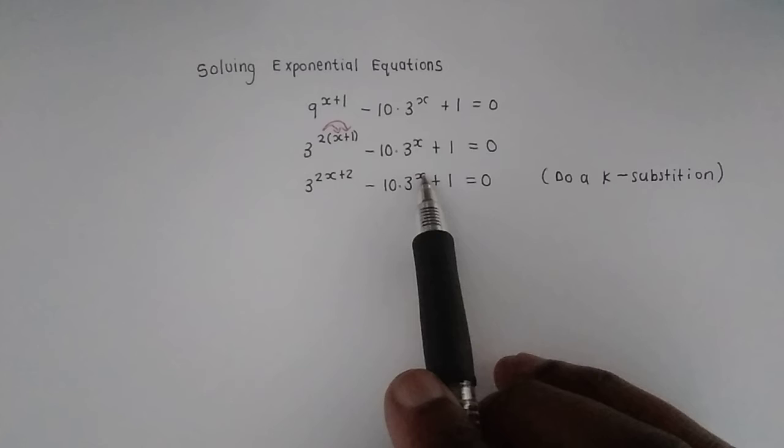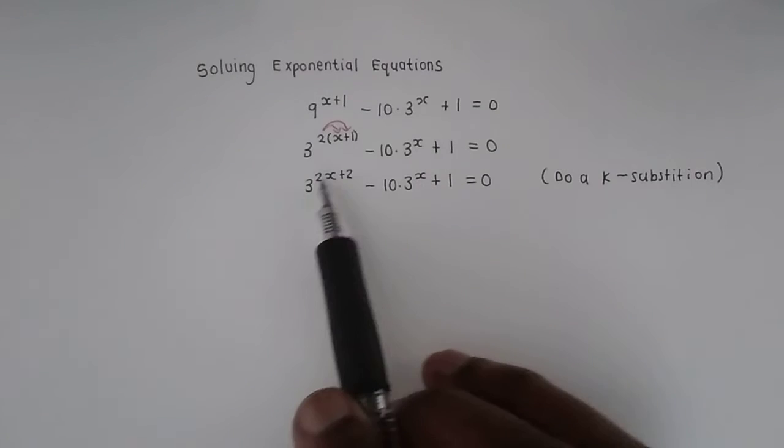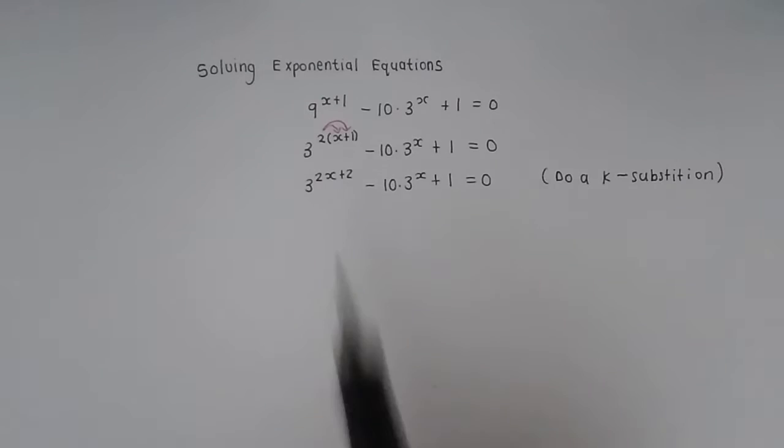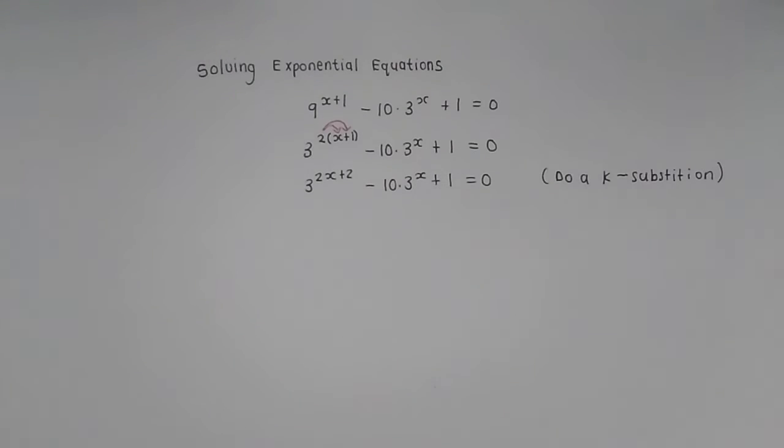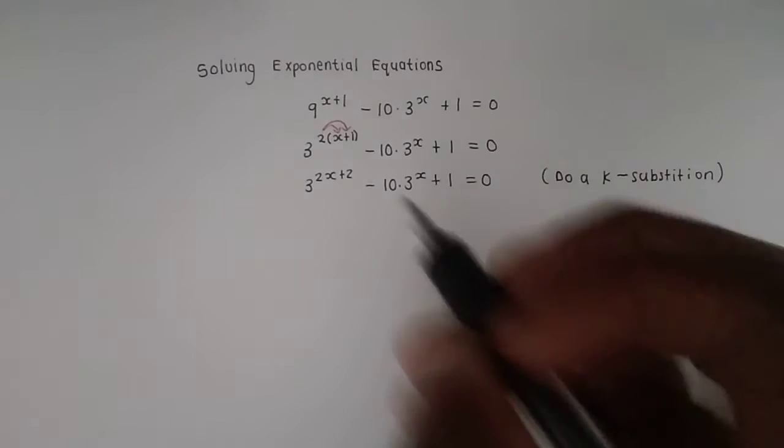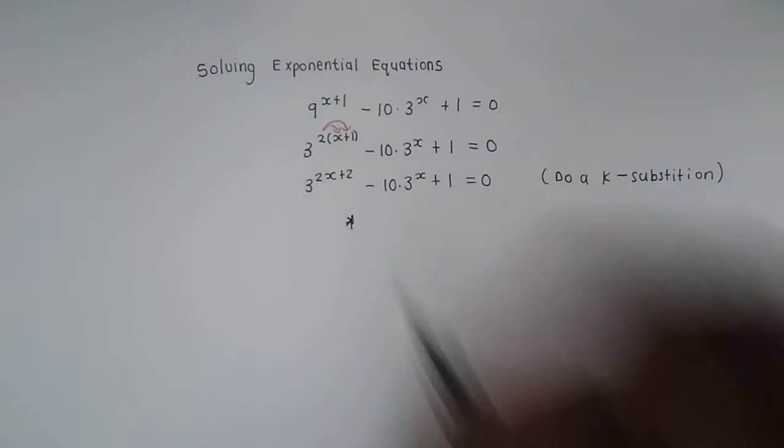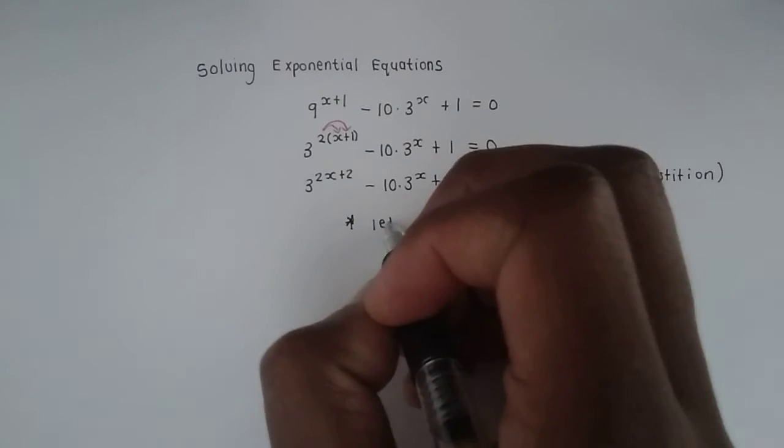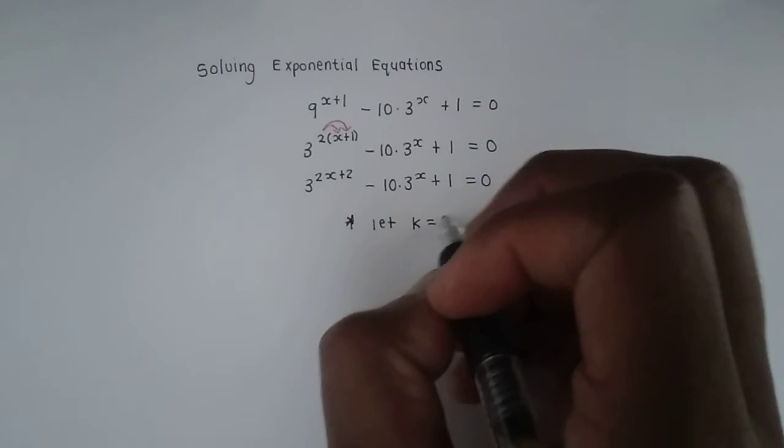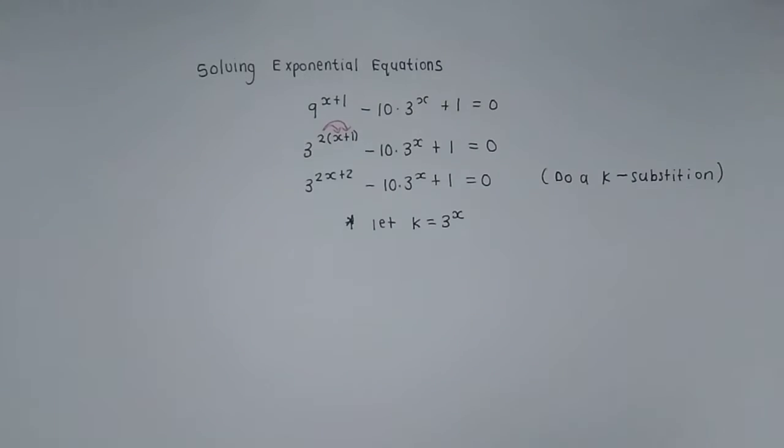We can see a 3 to the exponent of x over here. We can also see it in there. It is currently embedded. In other words, it is part of this expression. It is in there. We just need to get to it. So we are then going to say, and please write this down in your test and exams, that you are going to let k equal 3 to the x.